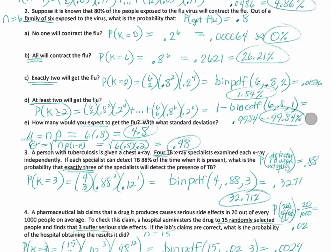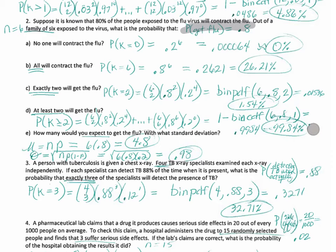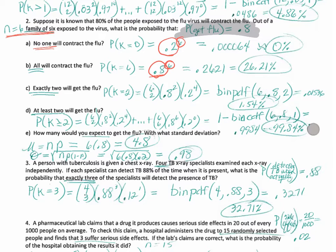Number 2 is about 80% of people who get exposed to the flu virus actually contracting it. The first question is: what's the probability that no one will contract the flu? This is the probability of not getting it, and I need all six people to not get it. So that's 0.2 to the sixth power, which is 0.000064 — about 0%. If you have a family of six exposed to the flu, there's pretty much a 0% chance that none of them are going to get it.